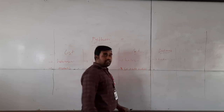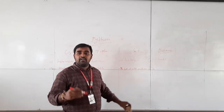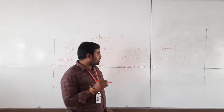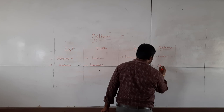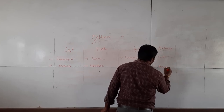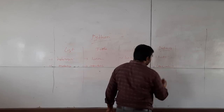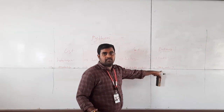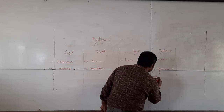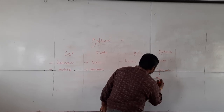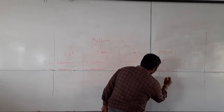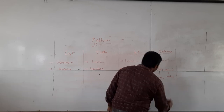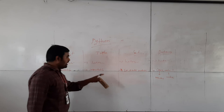And then dictionary. Dictionary is the combination of key and value pairs. The key is immutable — you cannot change the key value. And the value is mutable. These are the main differences.